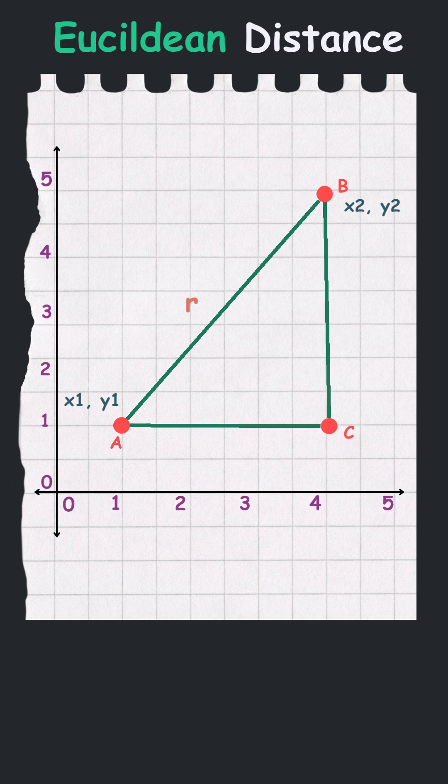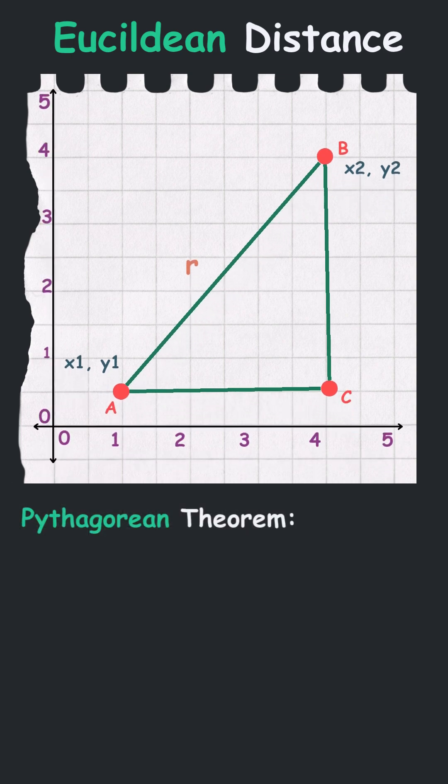And this is where geometry steps in. Using the Pythagorean theorem, we can calculate distance between point A and point B. So according to the Pythagorean theorem, hypotenuse square is equal to base square plus height square.